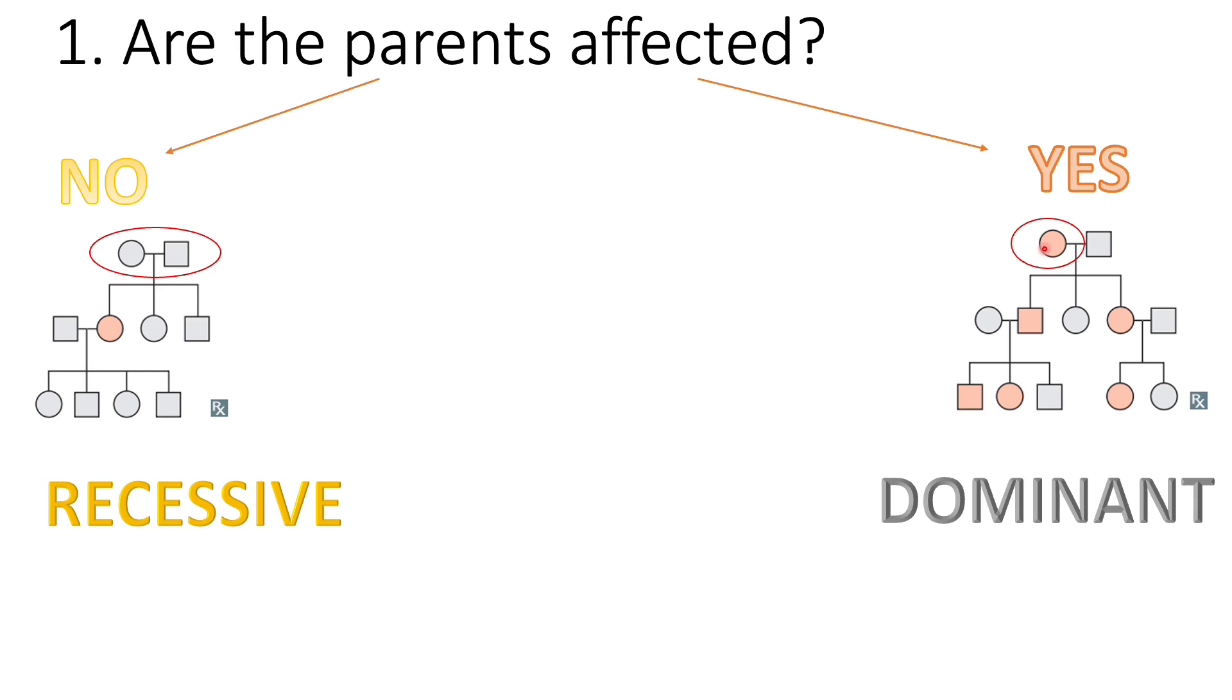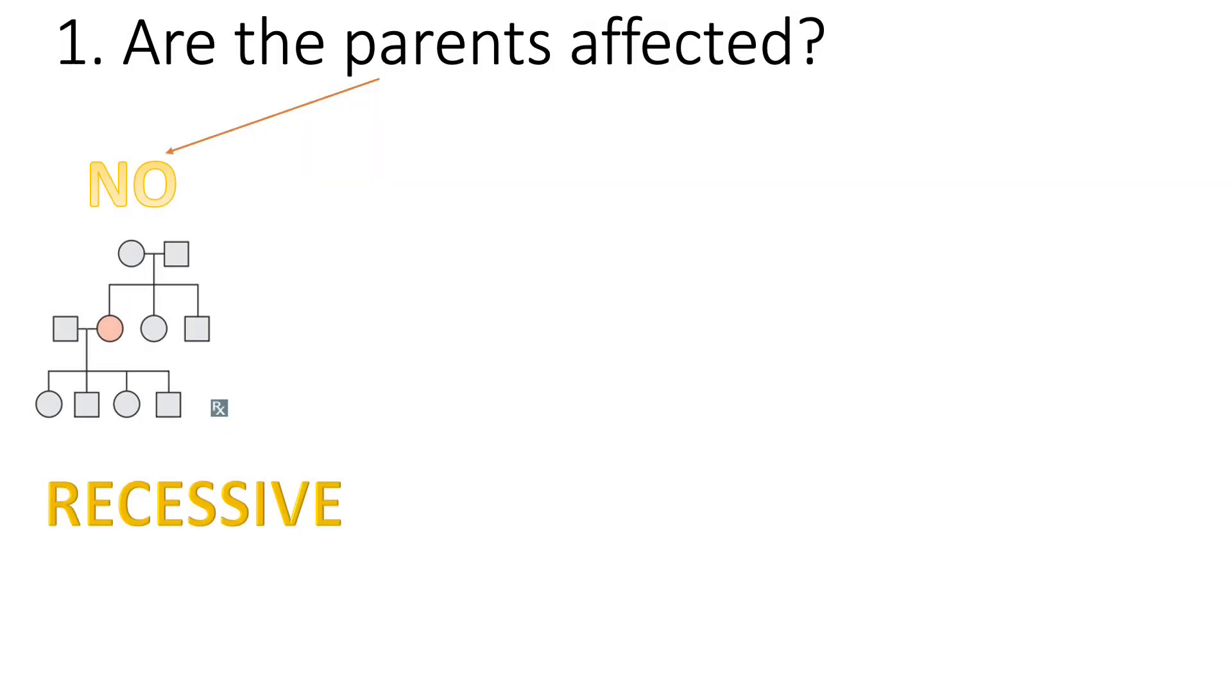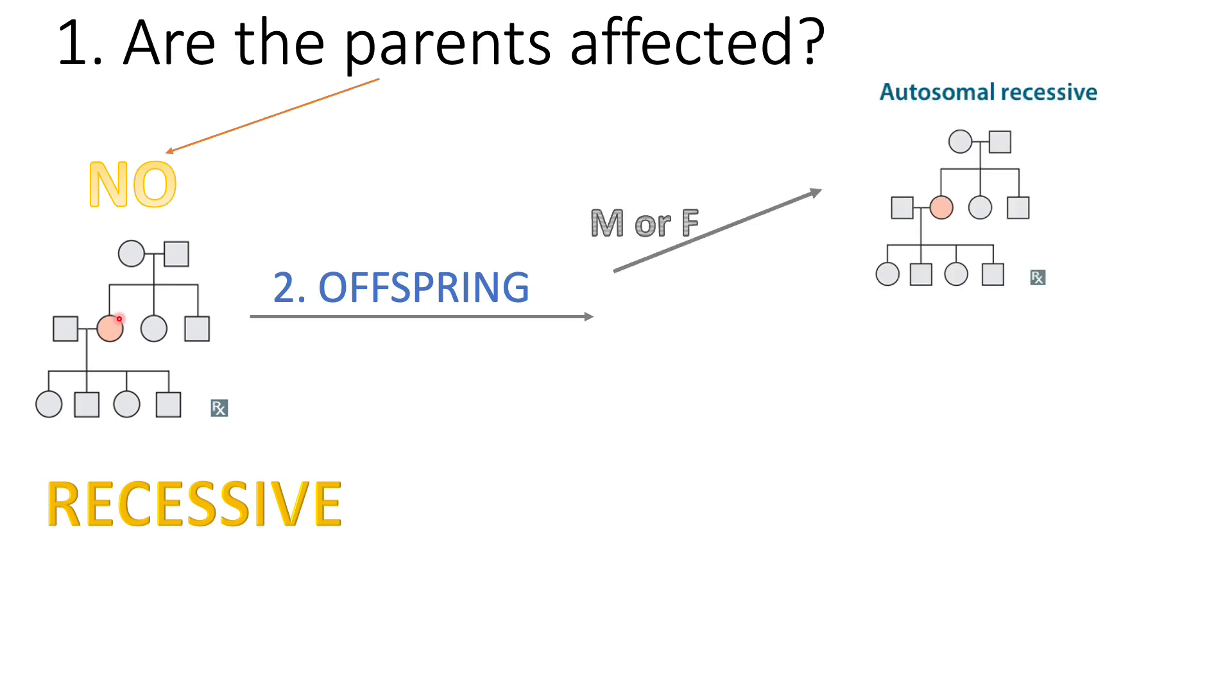That's the first question you need to ask yourself to get this over with, whether it's recessive or dominant. After you've figured out the parents are free and it's recessive, now you need to know whether it's autosomal recessive or X-linked recessive. At this point, look at the offspring. If the offspring affected may be male or female, then it's autosomal recessive. But if only males are affected, then it must be X-linked recessive.